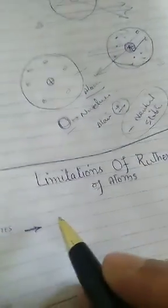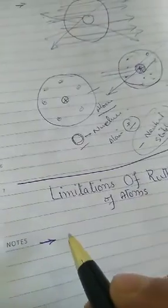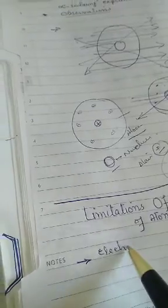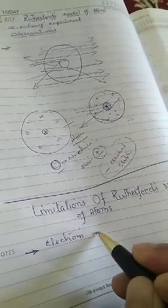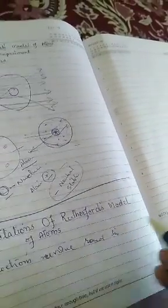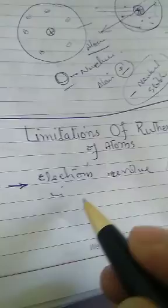According to Rutherford's model, electrons revolve around the nucleus in fixed orbits.